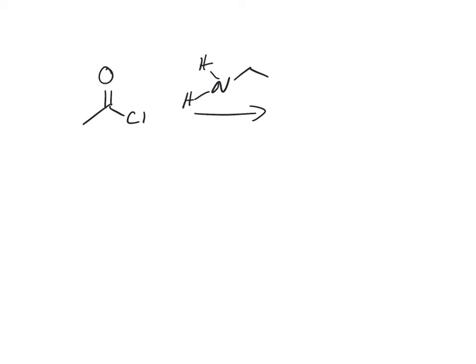Let's look at an acid chloride reacting with ethylamine. The question here is: why do we need at least two equivalents of amine or excess amine? Let's look at the mechanism and see why. It'll be clear to you once we look at the byproducts of this reaction.